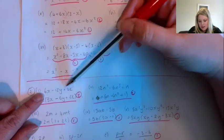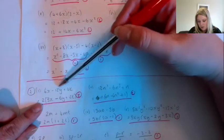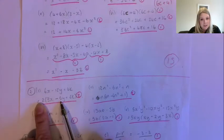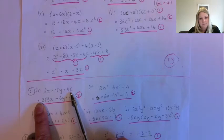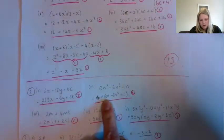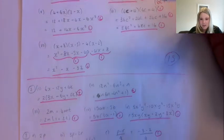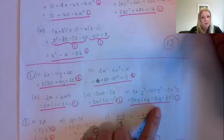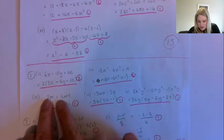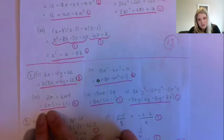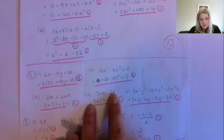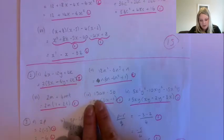Looking at this example, the only common factor is 2, so 2 goes outside the bracket. Then 2 multiplied by 3x gives 6x, 2 multiplied by minus 6y gives minus 12y, and 2 multiplied by 2k gives 4k. In the next one, only n can come out — leaving 12n minus 6n squared plus 1 inside. For this one, a lot of people didn't fully factorize: both numbers are divisible by 2, but there's also an m in each term so m can come out as well, giving 2m as the common factor.